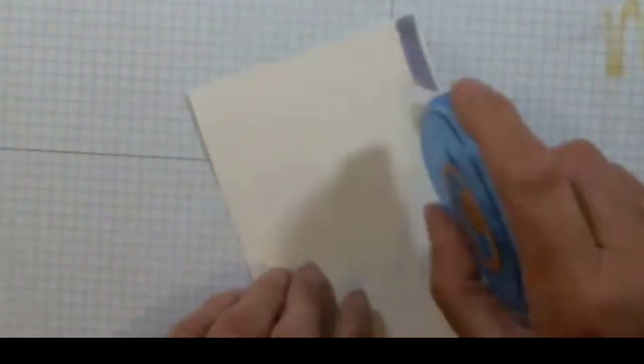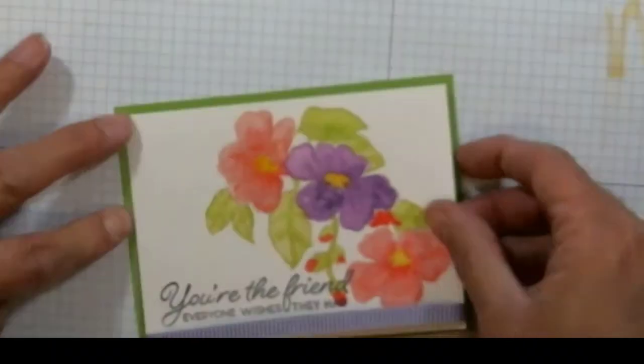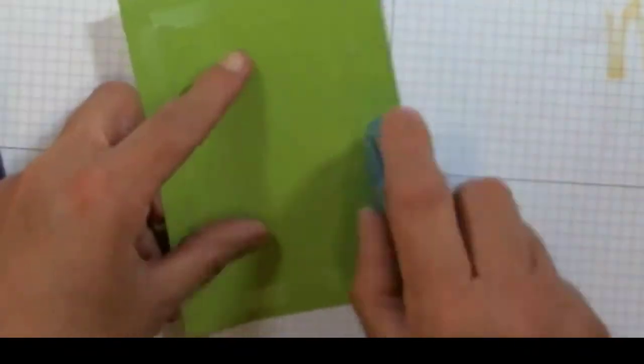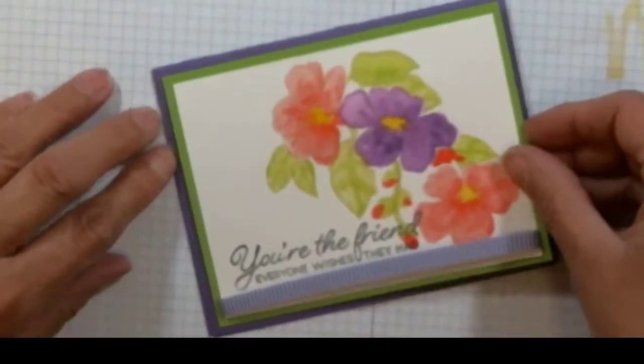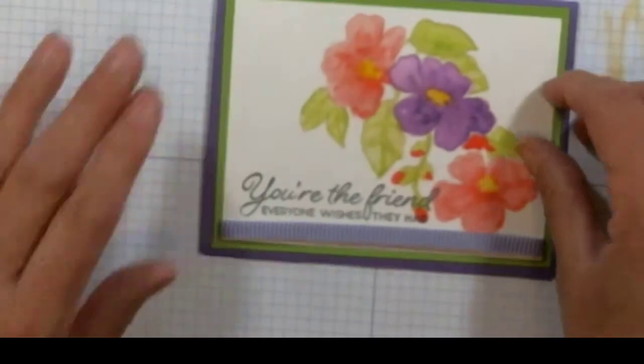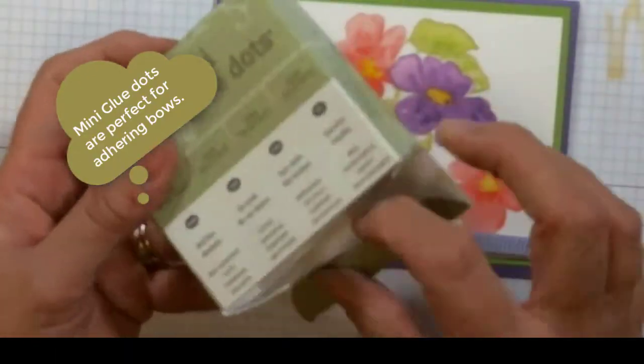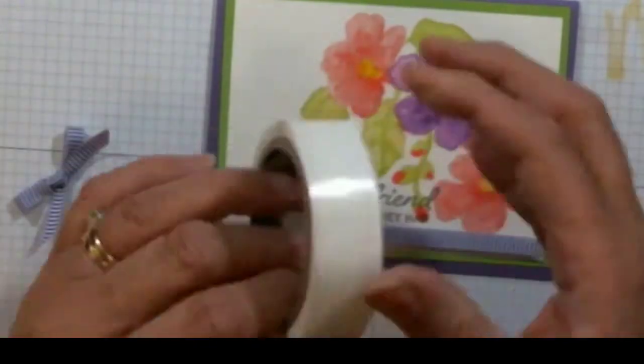Now we're just going to assemble our card. I'm going to adhere it to Granny Apple Green, and then I'll adhere that to the main color of the card, which is Gorgeous Grape. Then I'll add a bow. The best way I find to add bows is to use your mini glue dots, and that's about all there is to it.